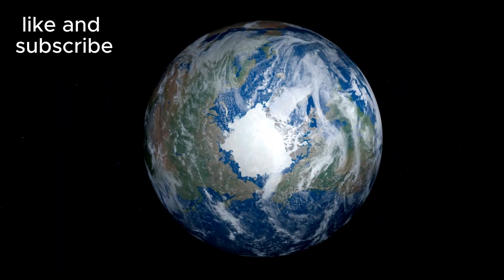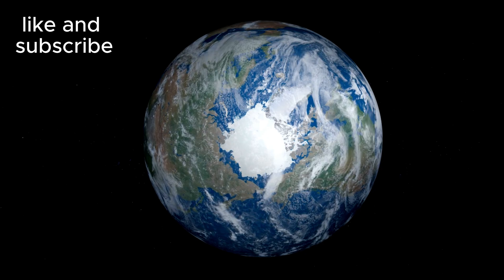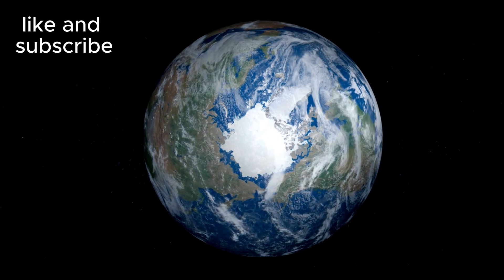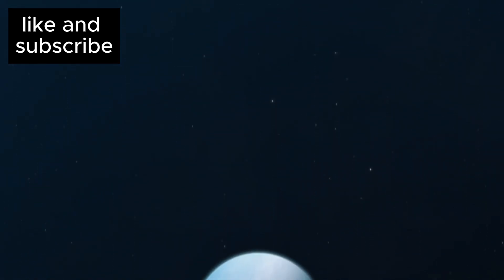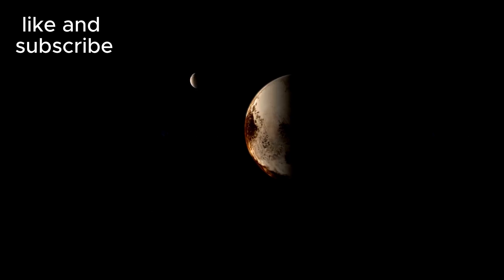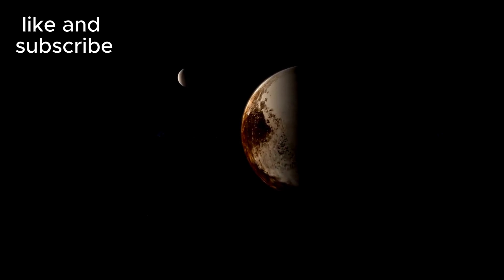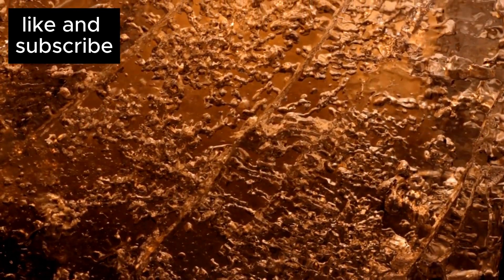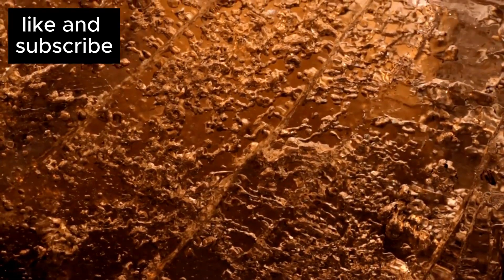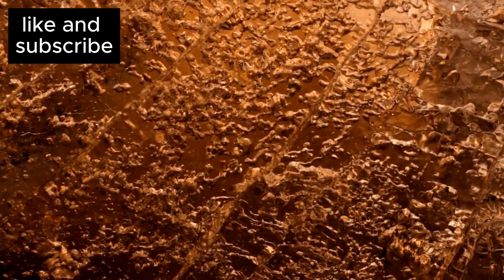The evidence for a hidden ocean beneath Pluto's icy crust goes even further. Pluto's orientation seems to have shifted over time, likely due to the massive weight of the ice on its surface. This shift could explain why Pluto's glacier is perfectly aligned with its largest moon, Charon, suggesting a gravitational dance between the two bodies. The cracks and faults stretching across Pluto's surface are also signs of flexing and movement, further supporting the idea of a liquid layer beneath.